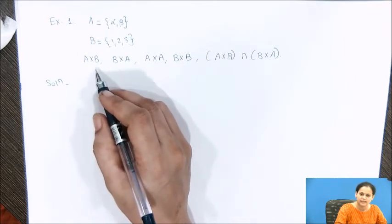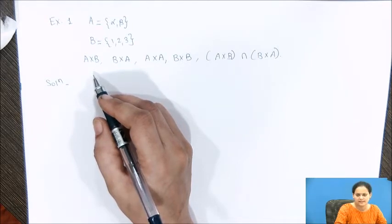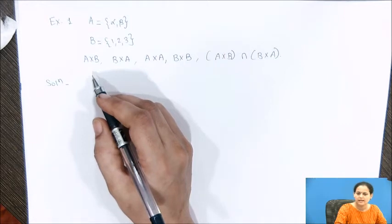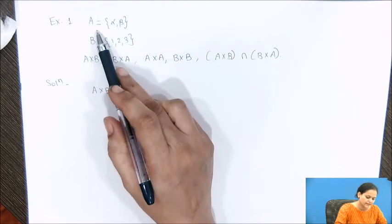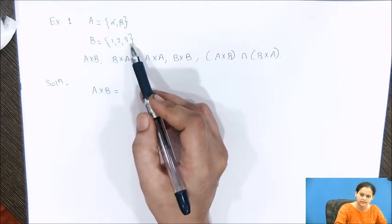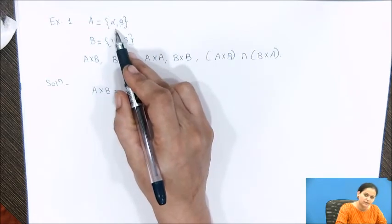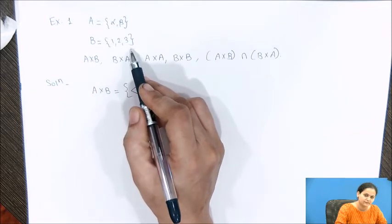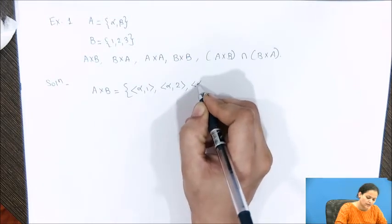First we need to find A×B. When you apply the Cartesian product operation, it simply combines each and every element from the first set with each and every element from the second set, resulting in a set of ordered pairs where the first element is from the first set and the second element is from the second set. We observe A contains two elements: α and β. B contains three elements: 1, 2, and 3. The first element from A is α, and we combine that with each element from set B, giving us (α,1), (α,2), and (α,3).